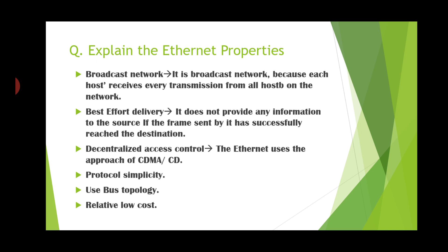Now we will see the properties of Ethernet. First property: broadcast network. It is a broadcast network because each host receives every transmission from all hosts on the network. Second, best effort delivery. It does not provide any information to the source about whether the frame sent by it has successfully reached the destination. Third, decentralized access control. Ethernet uses the approach of CSMA/CD. Next, protocol simplicity. Another property is that it uses bus topology and has relatively low cost. These are the properties of Ethernet.